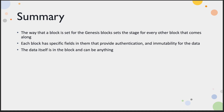In summary, the way a Genesis block is set sets the stage for every other block that comes along. Each block has specific fields to provide authentication and immutability for the data — hashing, signing, the nonce, and the transaction fee to make sure it gets processed. Some people who don't pay transaction fees may never get into the blockchain because no one will touch it. The data is considered immutable once it's been approved and put into the blockchain, whether it's Bitcoin or anything else.